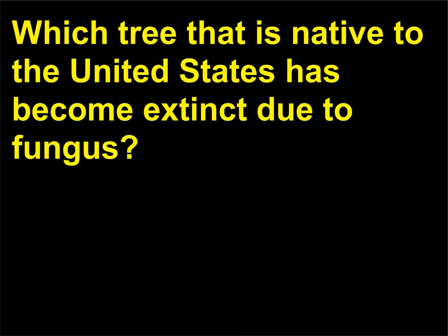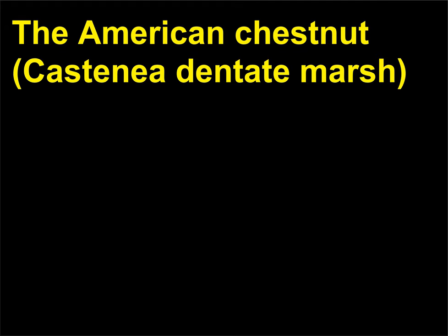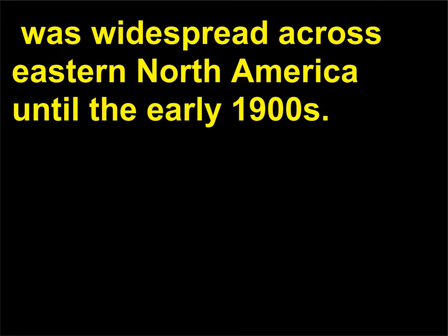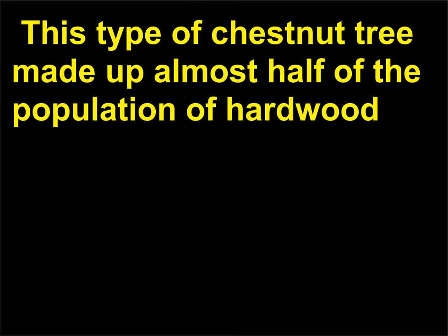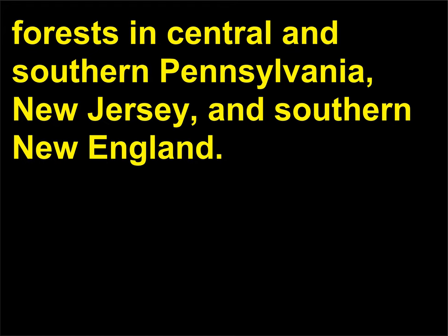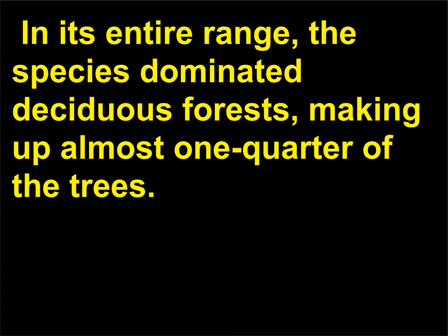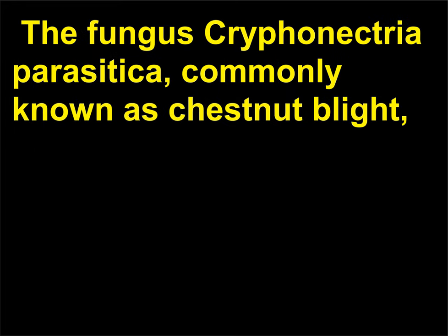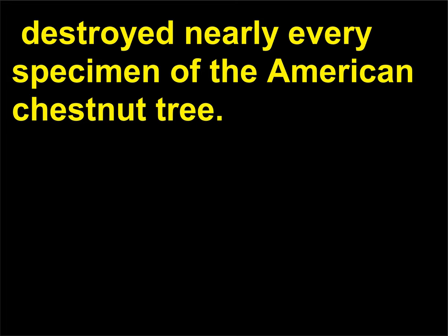Which tree native to the United States has become extinct due to fungus? The American chestnut (Castanea dentata) was widespread across eastern North America until the early 1900s, making up almost half the population of hardwood forests in central and southern Pennsylvania, New Jersey, and southern New England. In its entire range, the species dominated deciduous forests, making up almost one-quarter of the trees. The fungus Cryphonectria parasitica, commonly known as chestnut blight, destroyed nearly every specimen of the American chestnut tree.